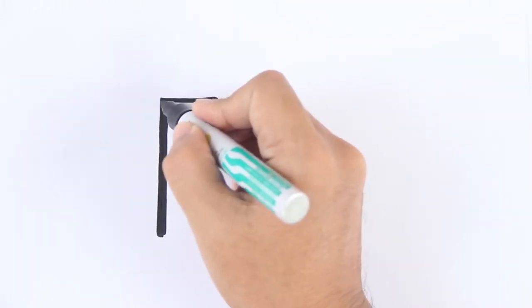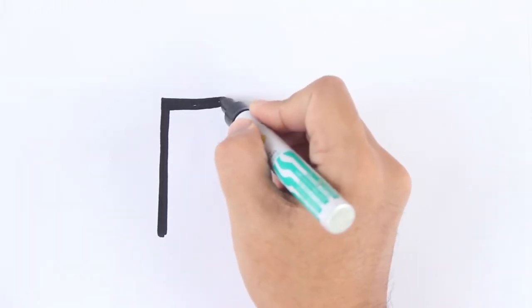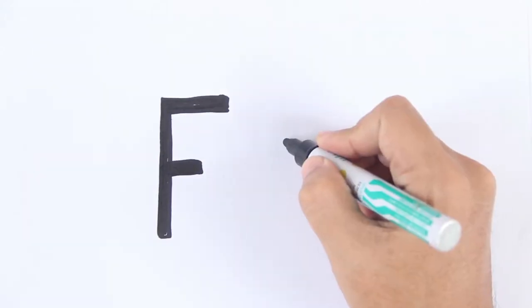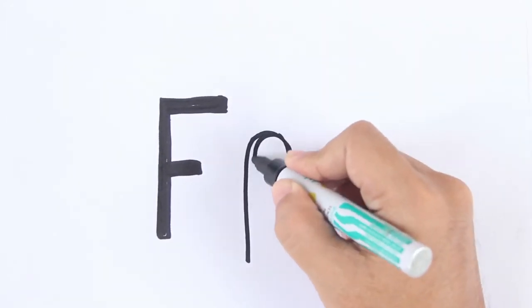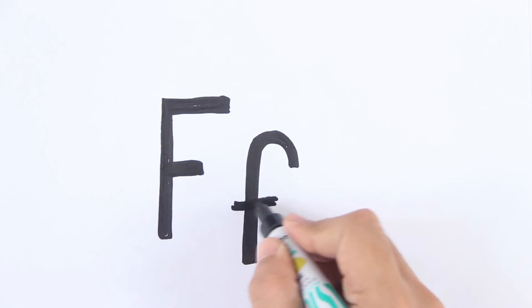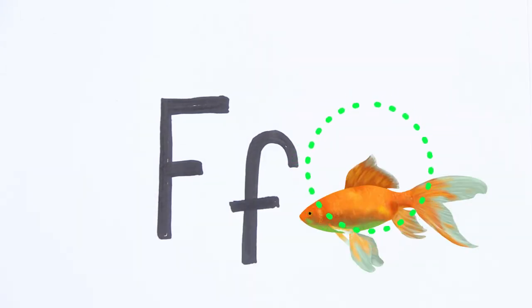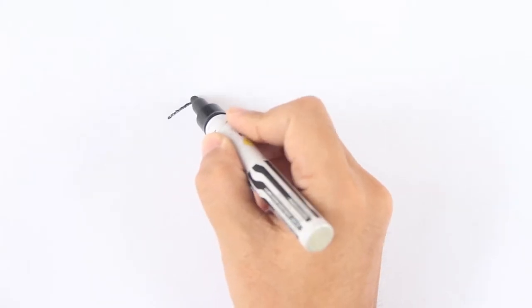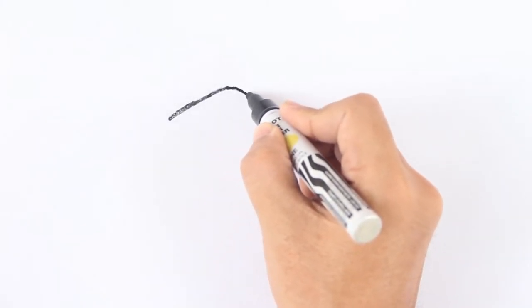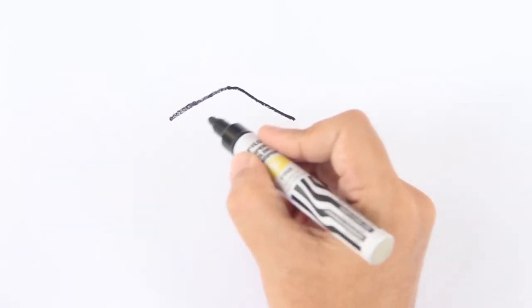This is capital letter F. And this is small letter F. F is for fish. Let's draw a fish.